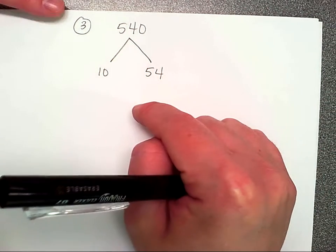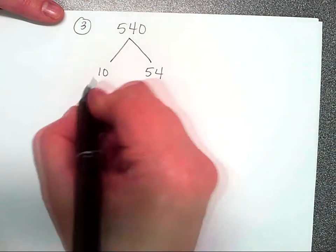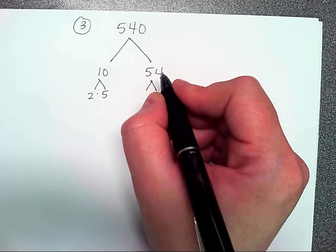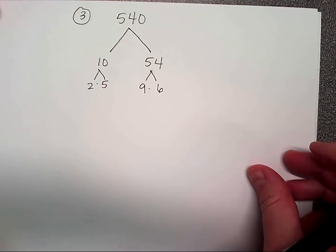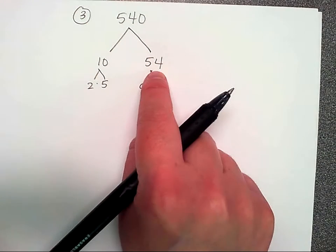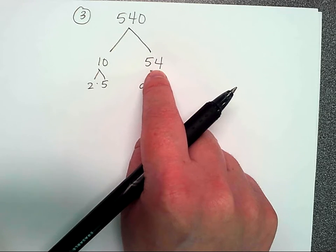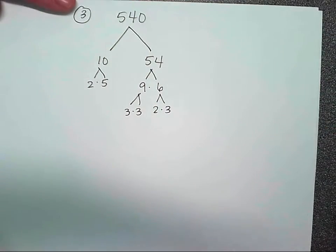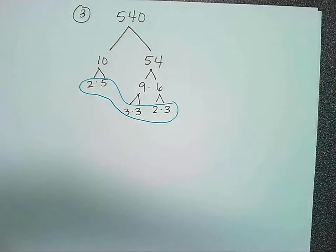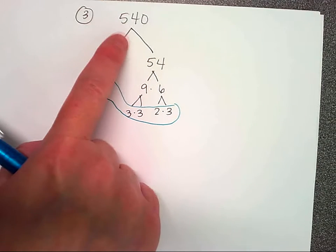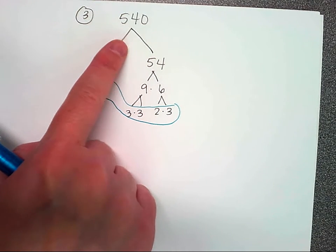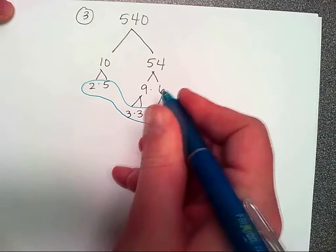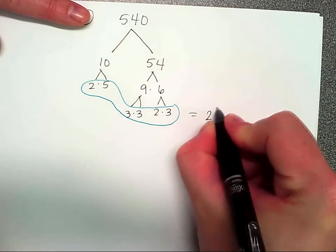For 540: it ends in zero, so divisible by ten — two times five. Then 54: five plus four is nine, so 54 is divisible by nine — nine times six. The last digit is four so it's divisible by two. Six is two times three, nine is three times three. A common mistake is forgetting a little branch, so I like to circle the bottom of the factor tree.